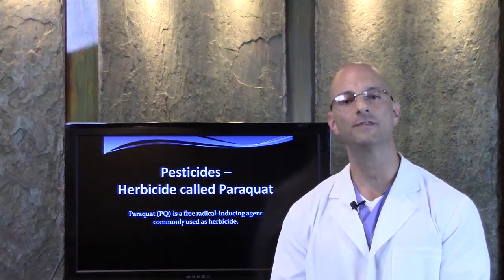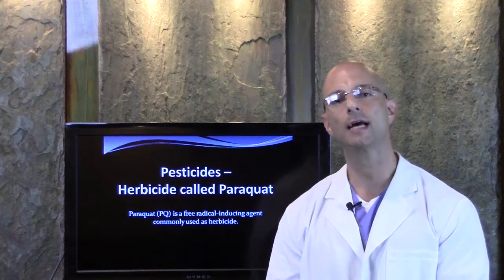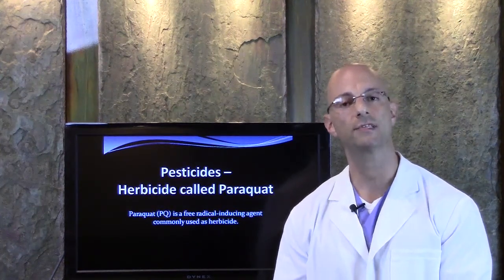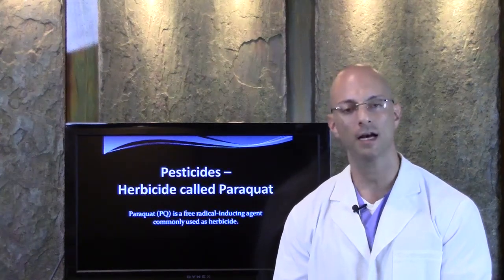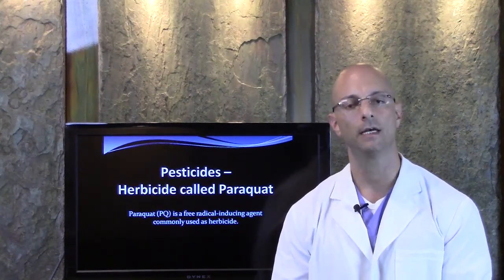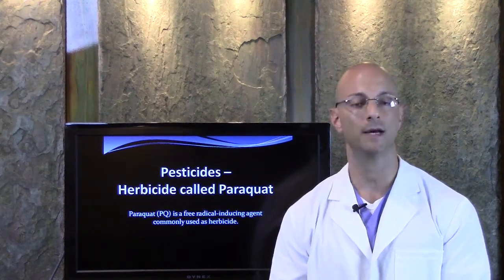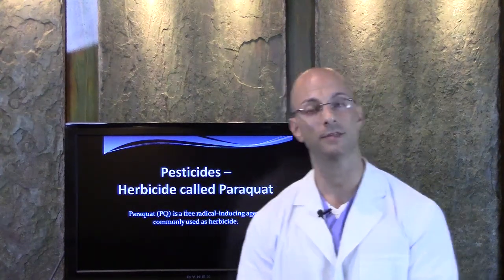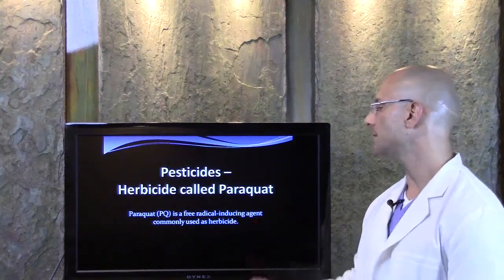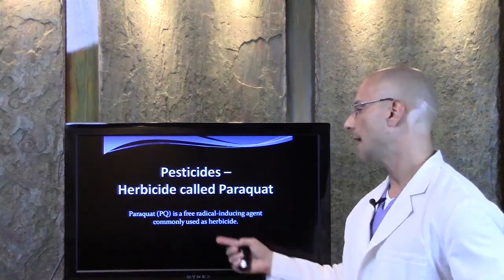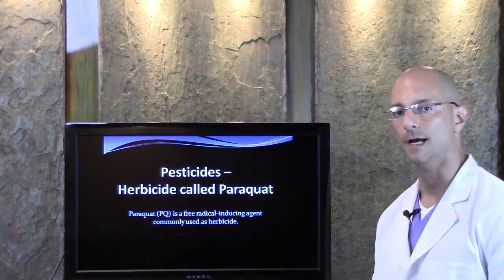Hello, I'm Dr. Herman. Welcome back to this video about your chronic condition. What I'm going to share with you is about a commonly used — or previously commonly used — herbicide that is in our water supply. It's still in the soil; it doesn't just disappear because they stopped spraying it about a decade ago, and this is filmed in 2012. There's this pesticide, herbicide called paraquat, and paraquat is a free radical inducing agent commonly used as an herbicide.